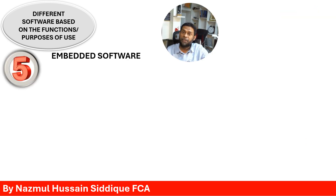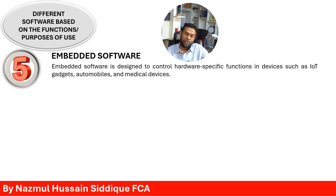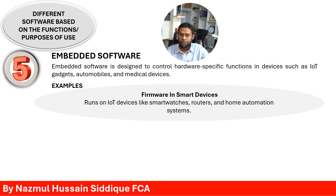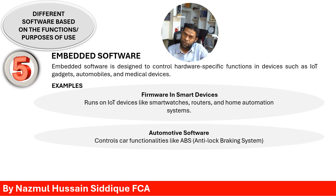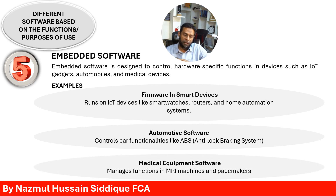The next category is embedded software. Embedded software is designed to control hardware-specific functions in devices such as IoT gadgets, automobiles, and medical devices. Examples include firmware in smart devices like smartwatches, routers, and home automation systems; automotive software that controls car functionalities like ABS (anti-lock braking system); and medical equipment software that manages functions in MRI machines and pacemakers.